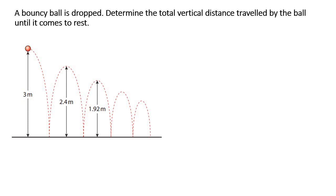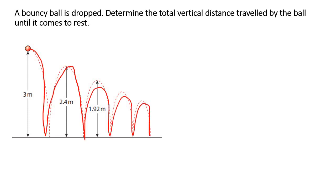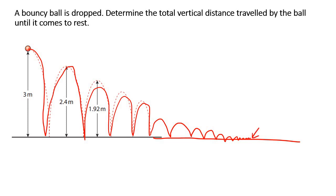Someone then drops that ball. Of course, the ball is going to travel downwards, it's going to bounce up, and it's just going to keep going. This diagram can go on a bit longer — it does something like that — and eventually the ball would stop. The question says: determine the total vertical distance traveled by the ball.